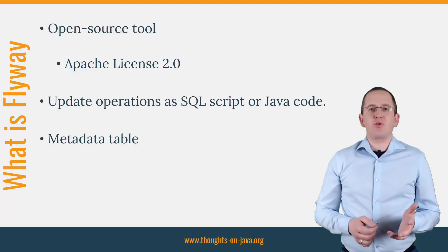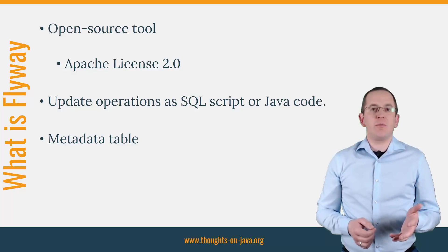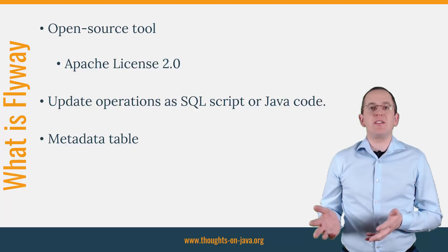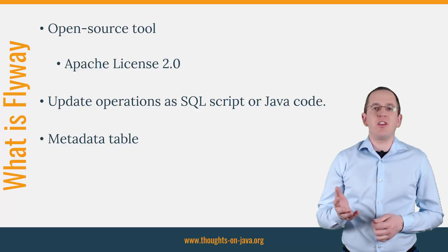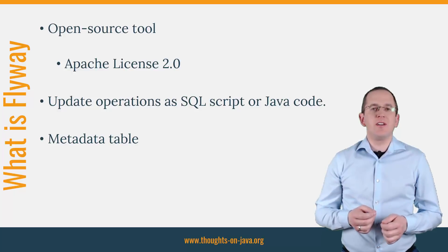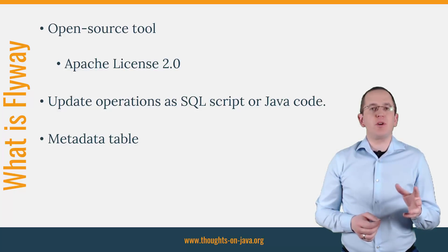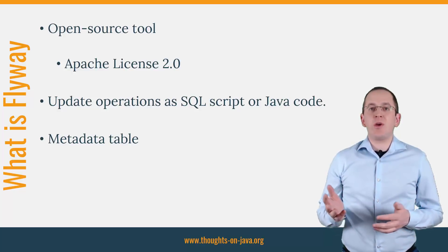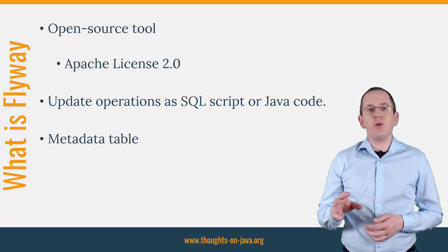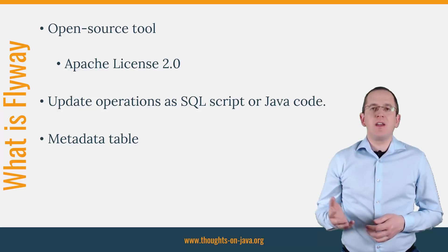The good thing about this process is that Flyway detects the required update operations and executes them. So you don't need to know which SQL update statements need to be performed to update your current database. You and your co-workers just define the update operations to migrate the database from one version to the next, and Flyway detects the current version and performs the necessary update operations to get the database to the latest version. To be able to do that, Flyway uses a metadata table to document the current database version and all executed updates. By default, this table is called schema-version.